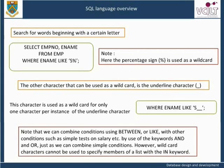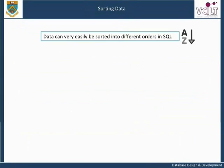Data can very easily be sorted in two different orders in SQL. We use the ORDER BY clause. This clause is optional and, when required, appears as the last clause in a query. The ORDER BY keywords are followed by the attribute or attributes on which the data is to be sorted. If the sort is to be done on more than one attribute, the attributes are separated by commas.